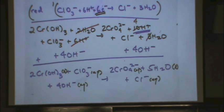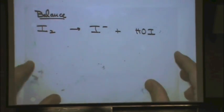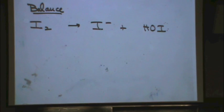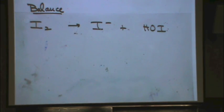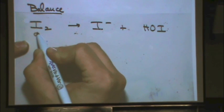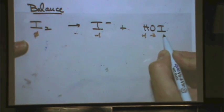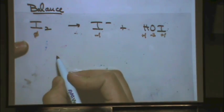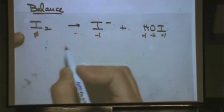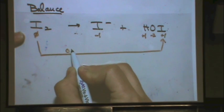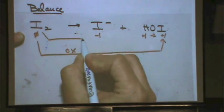Let's try one more. This one involves a concept I won't put on the exam, but it's still redox and the half reaction method still holds. What's the oxidation state of iodine in I₂? Zero. In HIO, iodine is plus 1. In I⁻, iodine is minus 1. What is oxidized? Iodine — it goes up in oxidation state. What is reduced? Also iodine — it goes down in oxidation state.